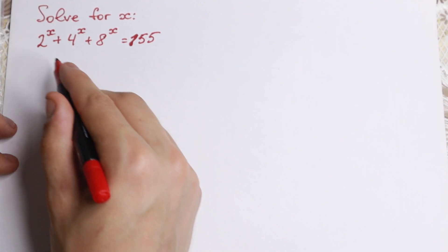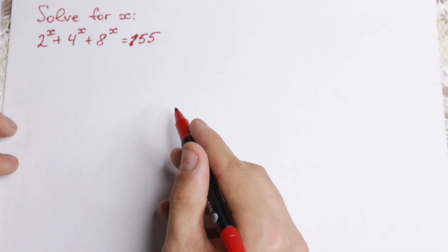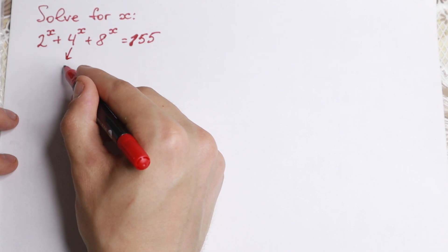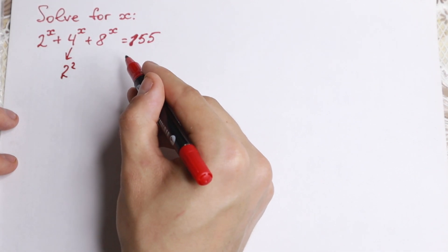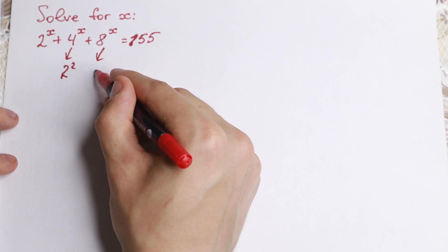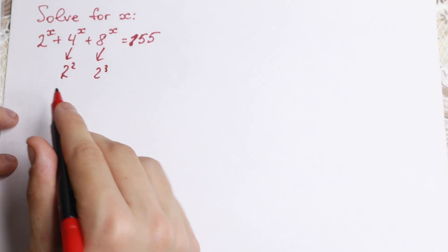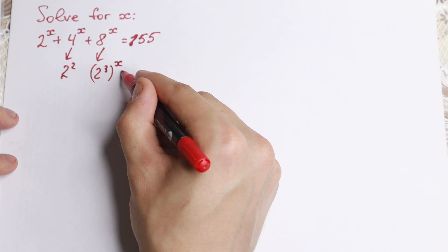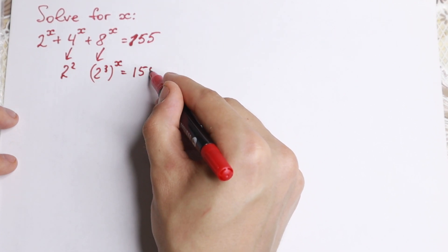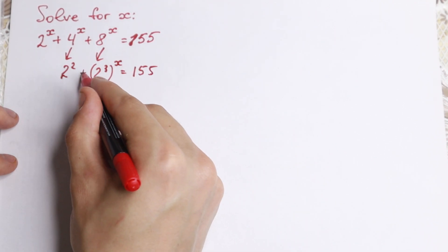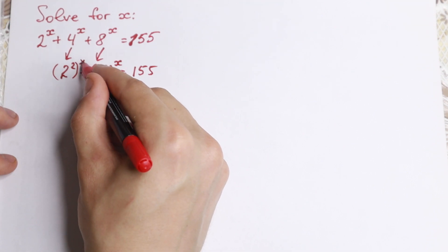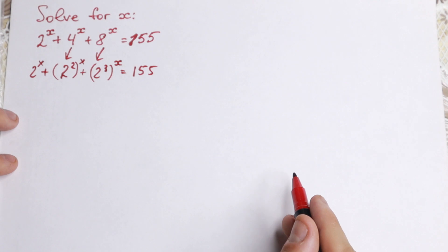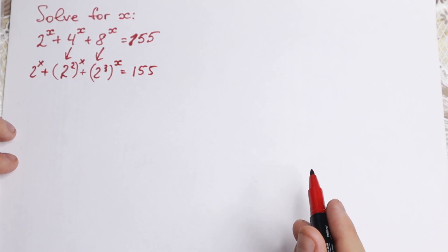If you look closely at our bases — 2, 4, and 8 — these are really convenient numbers, because we can easily write 4 as 2 squared and 8 as 2 cubed. So let's start with this and try to create the same base. We rewrite the equation so every term has base 2.